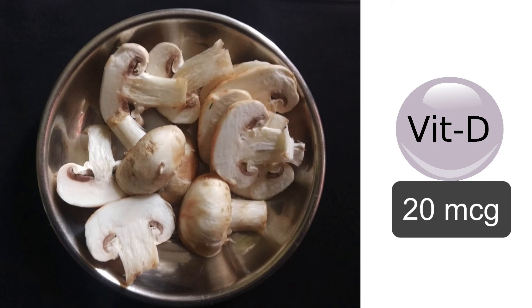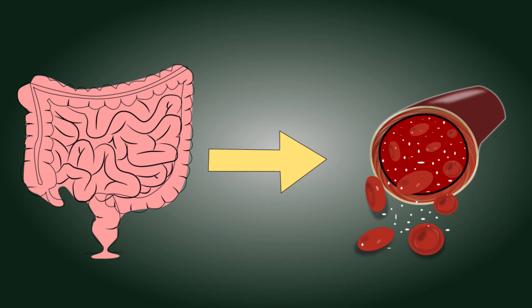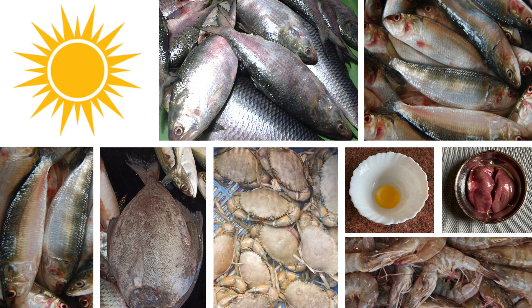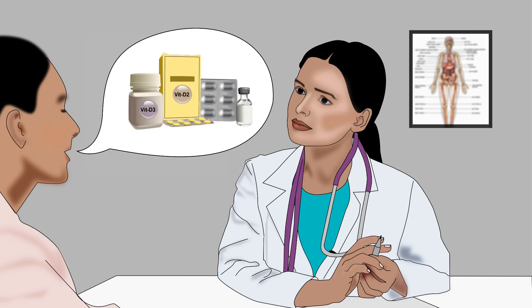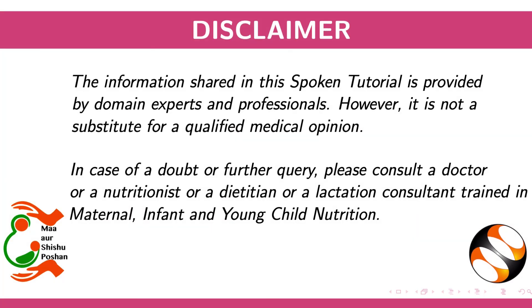100 grams of mushroom has around 20 micrograms, and 50 grams of soya bean has 33 micrograms. However, along with intake, absorption is very important. Vitamin D3 is better absorbed and used in the body compared to D2. Hence, sunlight and non-vegetarian food are the best sources of vitamin D. Please consult your doctor before taking any supplements. This brings us to the end of the tutorial. Thanks for joining.